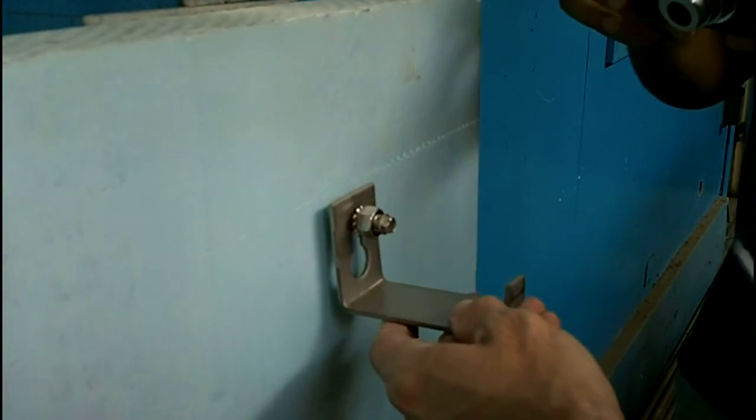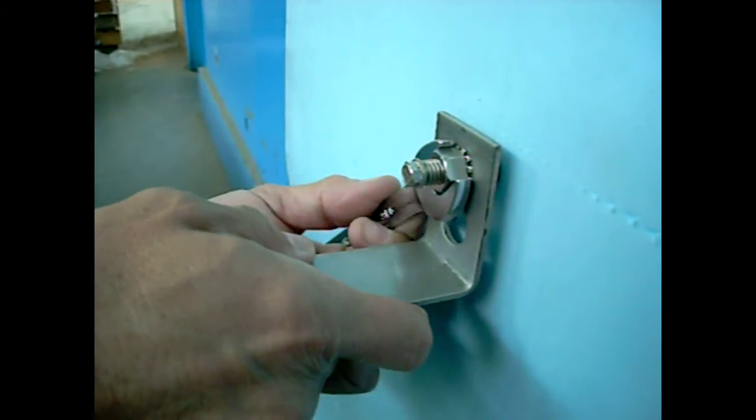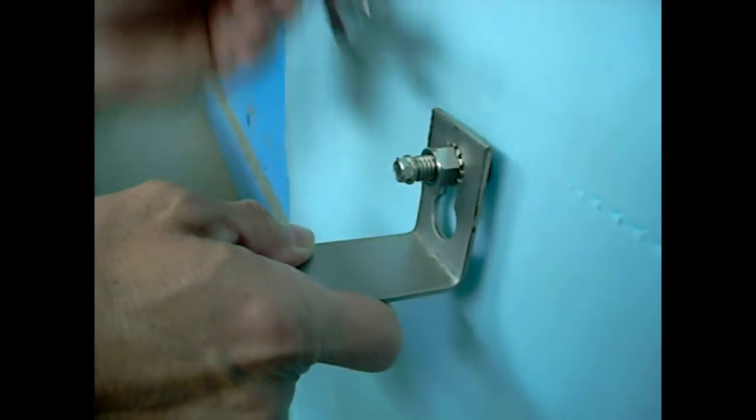Install the stone anchor between the two nuts and hand tighten the exterior nut. Using a wrench, fully tighten the nut locking the stone anchor into place.